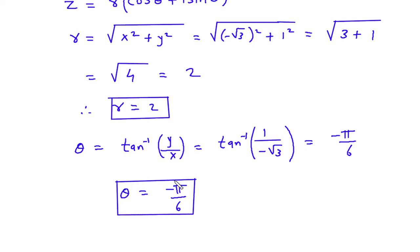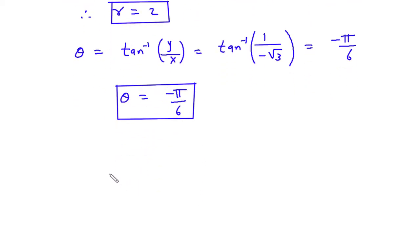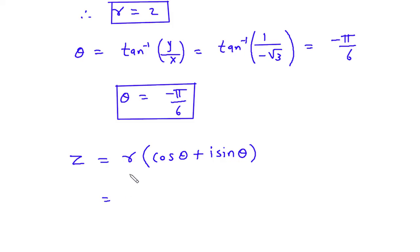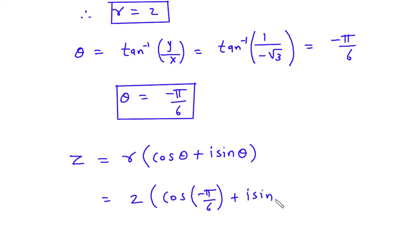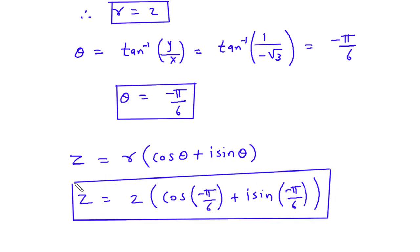From this R and theta we can find the modulus-amplitude form, which is Z is equal to R in bracket cos theta plus i sin theta. So this will be 2 in bracket cos of minus pi by 6 plus i sin of minus pi by 6. So therefore Z is equal to this value. This is our modulus-amplitude form.